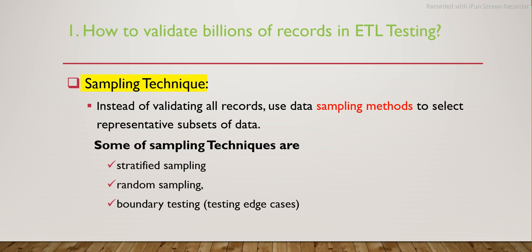For sampling: instead of validating all records one by one, we take a sample. There are various sampling techniques such as stratified random sampling and boundary value analysis. For example, from 1 billion records you might extract a sample of one thousand records that is easier to test. The sample is not just the first thousand records - it is a combination drawn from multiple places across the full dataset.